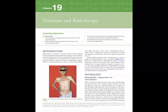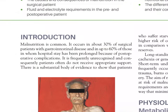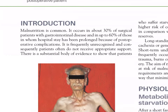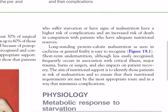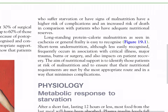Chapter 19: Nutrition and Fluid Therapy. Introduction: malnutrition is common, occurring in about 30% of surgical patients with gastrointestinal disease and up to 60% of those in whom hospital stay has been prolonged because of post-operative complications. It is frequently unrecognized and consequently patients do not receive appropriate support. There is a substantial body of evidence showing that patients who suffer starvation or have signs of malnutrition have a higher risk of complications.